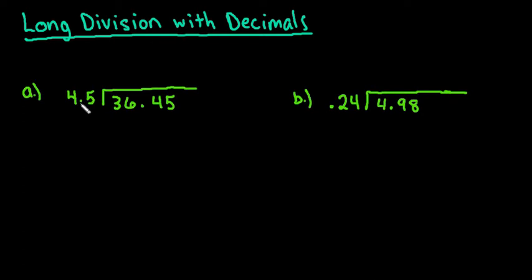So what we want to do is we want to move this over one place to the right which would essentially make this 45, but if I change this by a factor of 10 I have to change the part underneath the division symbol also. So I have to move this one over and that's where we would put our decimal place for our answer. The decimal place if you move it out here you have to move it inside as well.